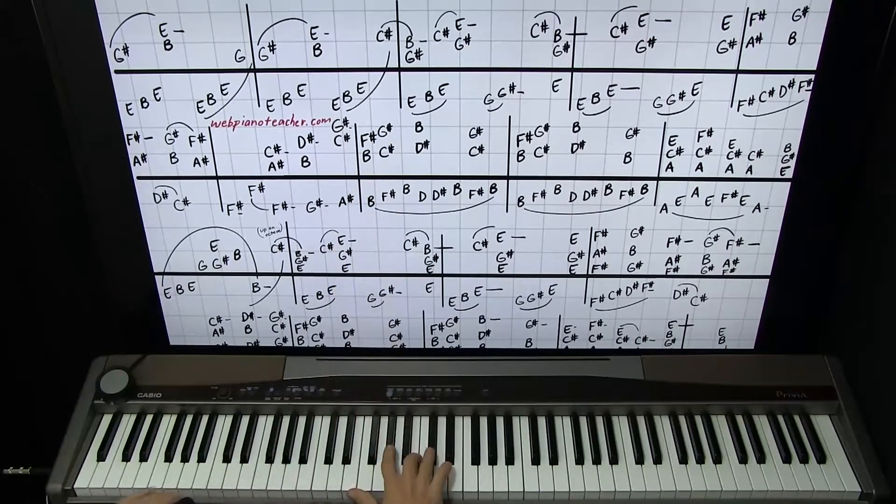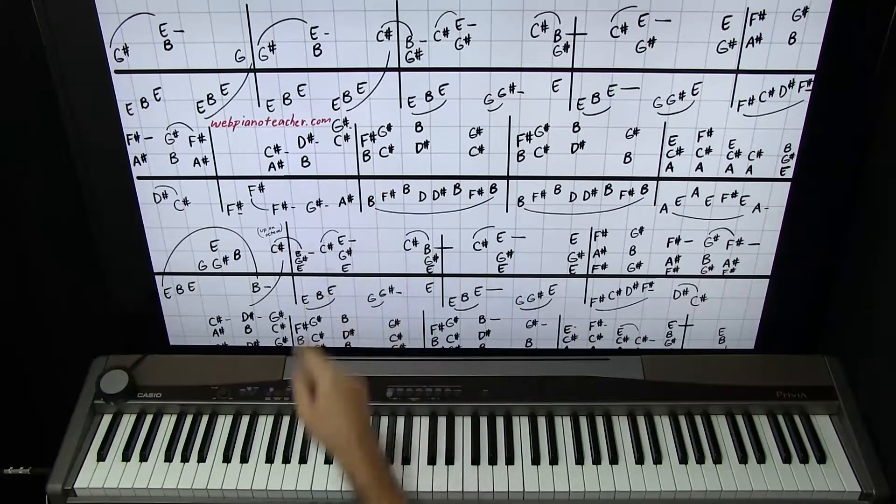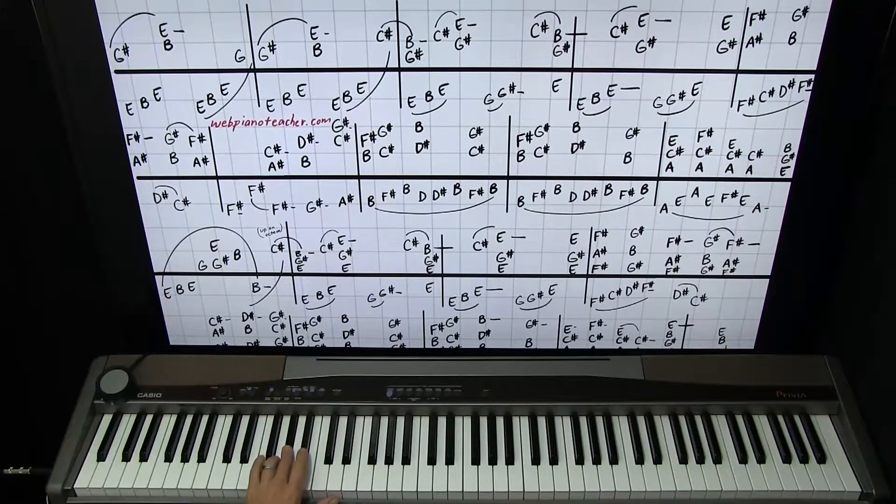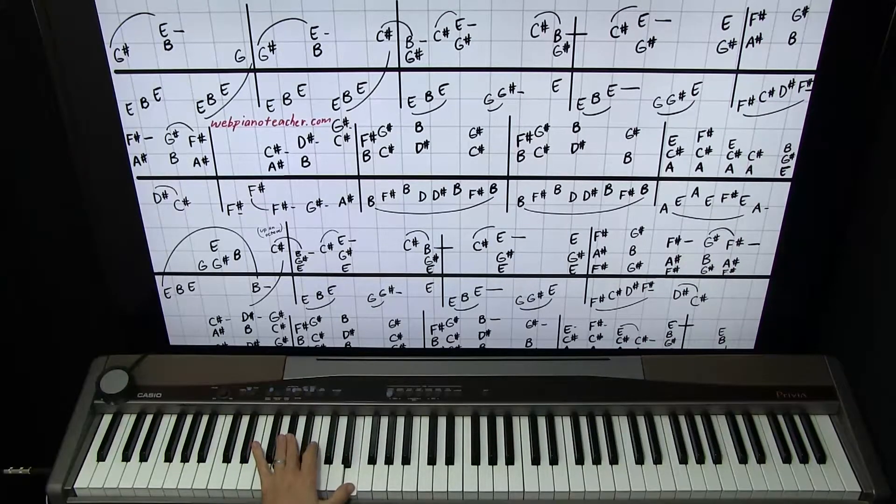All right. So we have right hand. The left hand is going to continue with the E, B, E. And then I have a little G, G sharp thing, a little bluesy thing. Three, four, or four, three. And one more E on the thumb at the end.